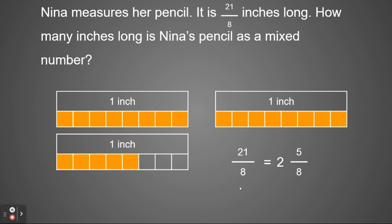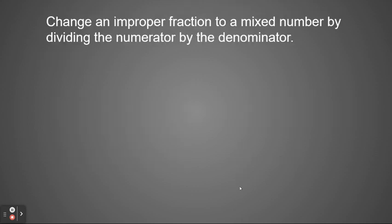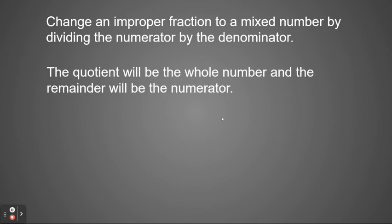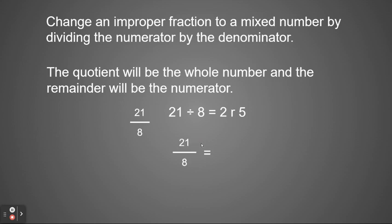Let's look at how we can do that using a formula. This time we're going to change our improper fraction to a mixed number, but instead of multiplying, we're going to do the inverse operation, which is dividing. So we're going to divide the numerator by the denominator. The quotient will become the whole number, and the remainder will be the numerator. So if we had twenty-one eighths, we divide twenty-one by eight, which gives me two with a remainder of five, because two times eight is sixteen and five more is twenty-one. So twenty-one eighths is equal to two and five eighths — my remainder five becomes my numerator, and eighths stays the same.